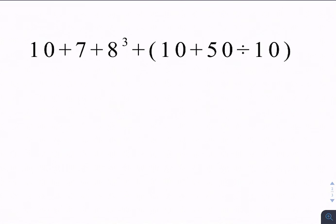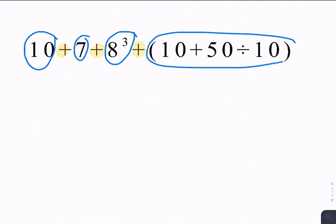So what I like to do for circling terms is find any addition or subtraction that is not inside parentheses. And that kind of helps me determine where my terms are. So 10 on its own because it's not being multiplied or divided by anything. 7 on its own. 8 to the third power, and then this whole thing right here in parentheses. So I have 1, 2, 3, 4 circles. And between each of those circles I'm going to be adding because there's all addition signs there.